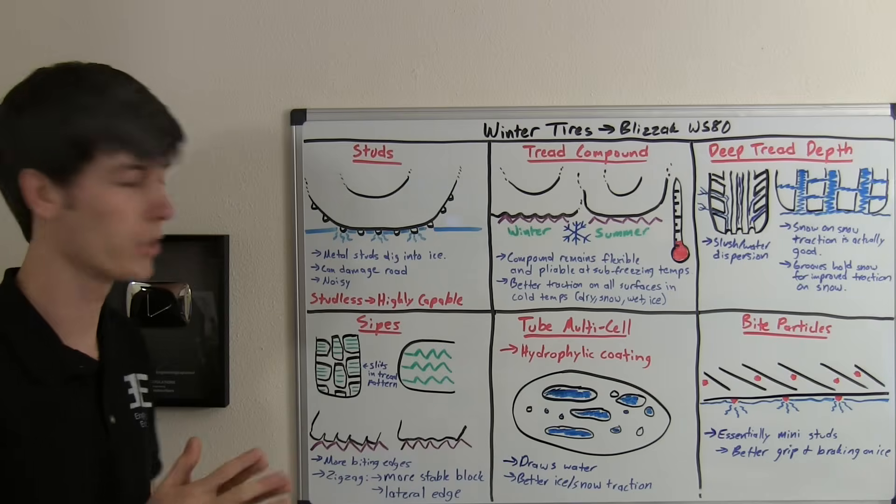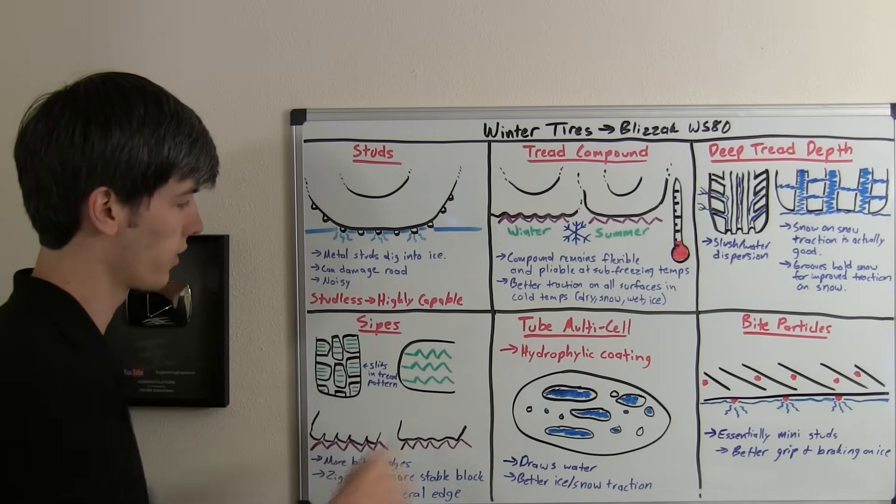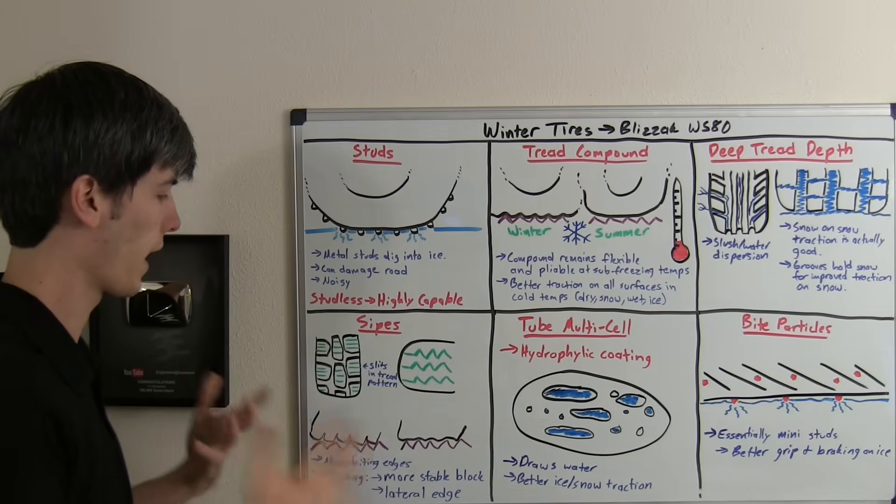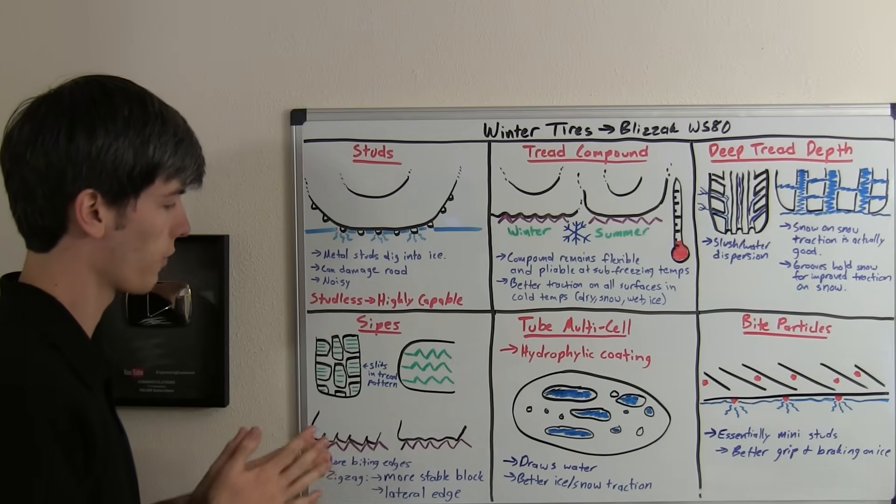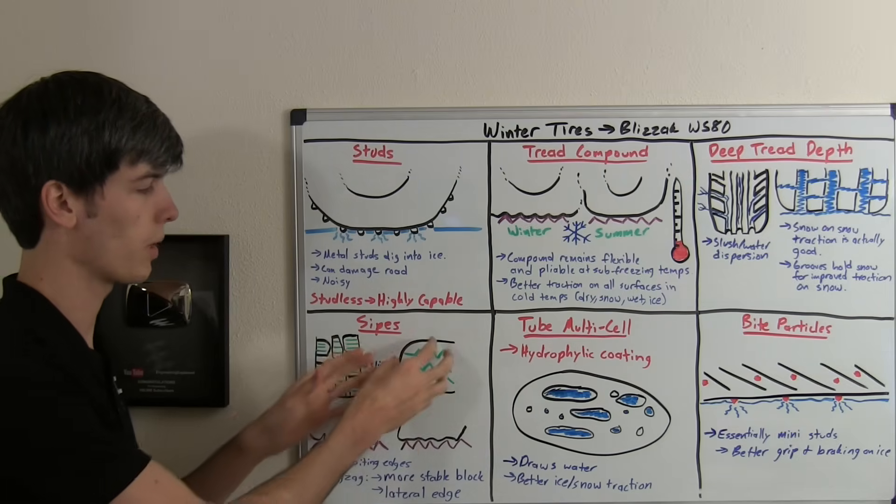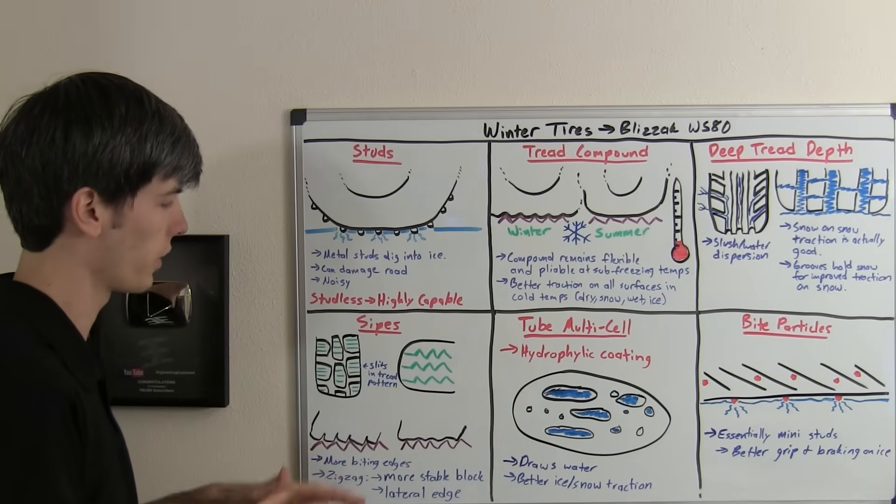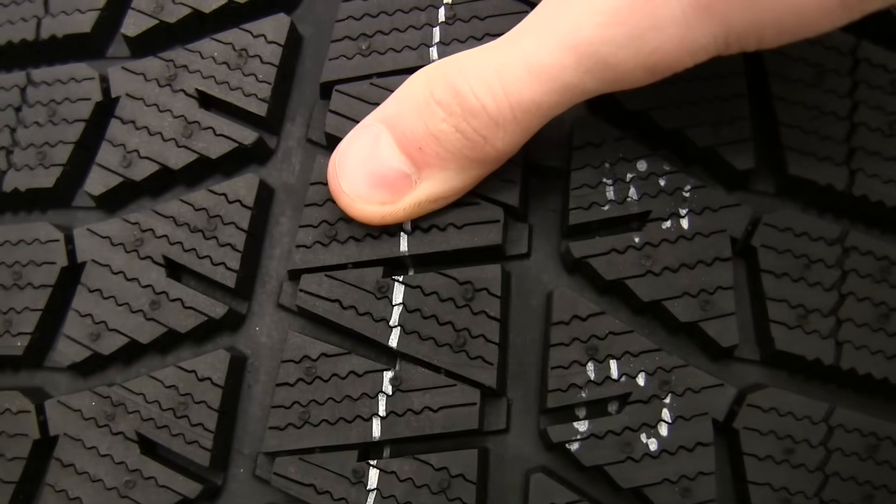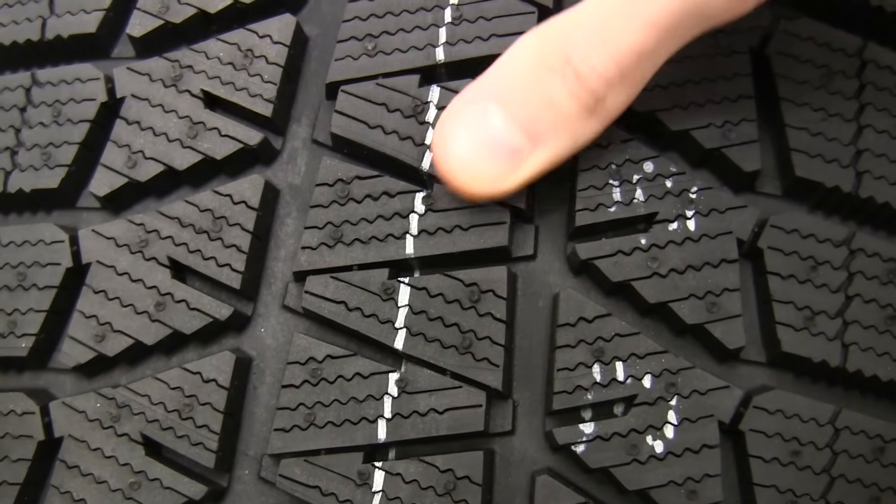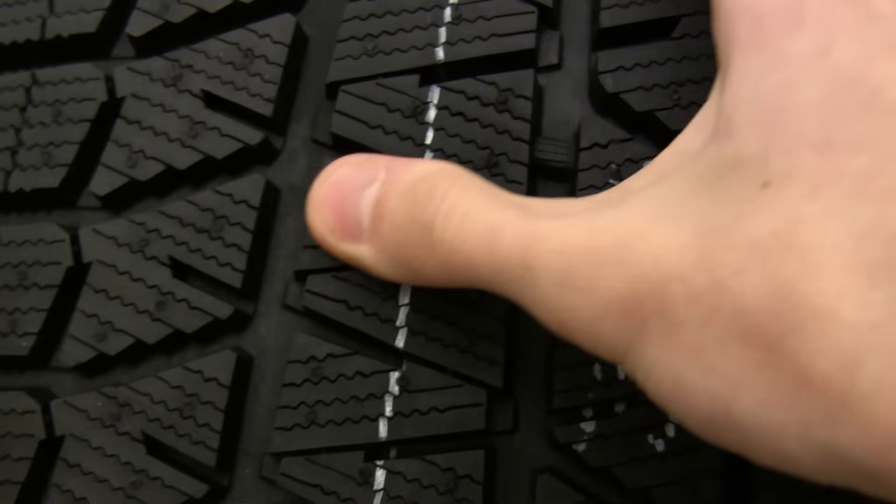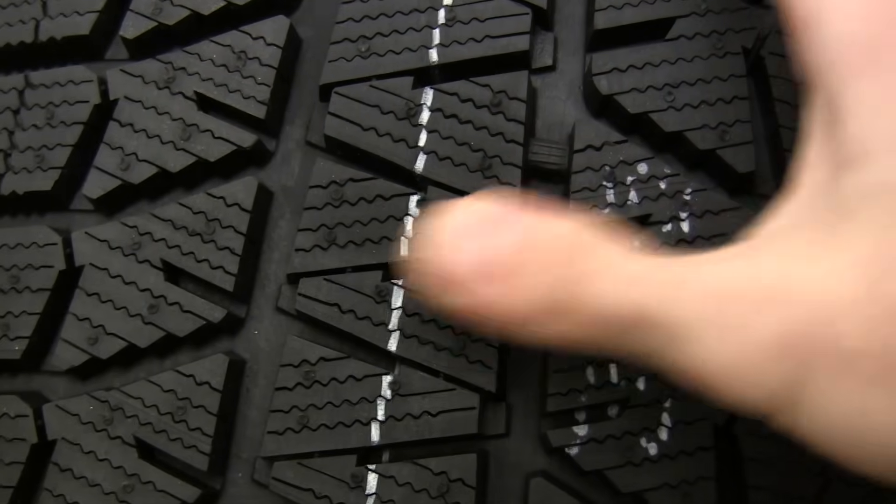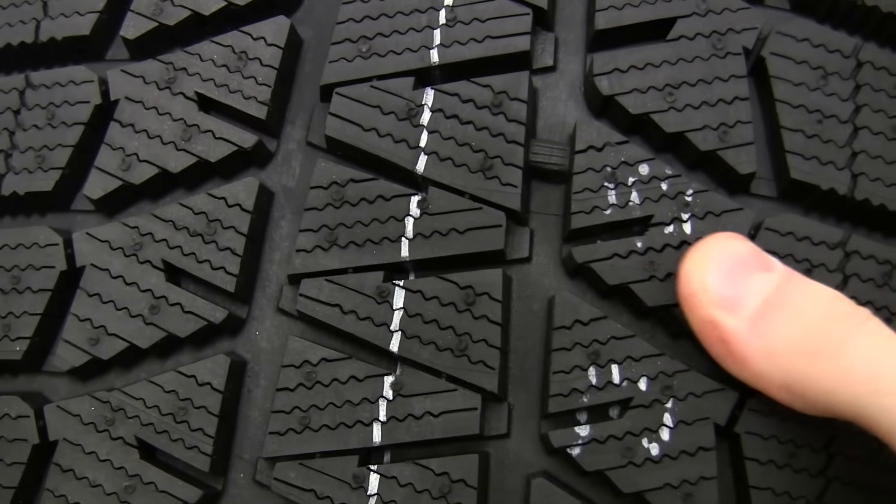Now the other thing that Bridgestone does with this tire is they have these zigzag pattern sipes, and there's two reasons for doing this. The first reason is it's more stable, so the block itself is going to be a bit more rigid so that it won't have so much flexibility in moving around. Also, it's going to give it a lateral edge, so not only will it improve longitudinal grip, but lateral grip as well, since you've got these sipes in both directions.